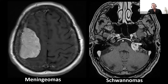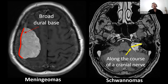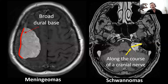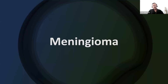The differential between meningioma and schwannoma is actually very easy. Meningiomas arise from the meninges and have a very broad dural base. Schwannomas arise from Schwann cells responsible for myelination of cranial and peripheral nerves. Intracranially, we will only see schwannomas along cranial nerves, and in about 90% of cases that's going to be the vestibulocochlear nerve. So if you see an extra-axial lesion located along the course of a cranial nerve — schwannoma.